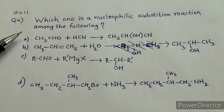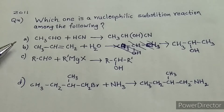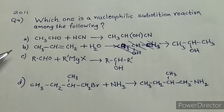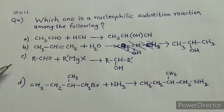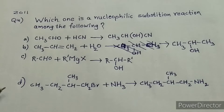Question: Which one is a nucleophilic substitution reaction among the following? Option A: CH3CHO reacts with HCN to give a product. Option B: CH3CH=CH2 (propene) reacts with H2O to give a product. Option C: RCHO reacts with R-MgX to give a product. Option D: CH3CH2Br reacts with NH3 to give a product.